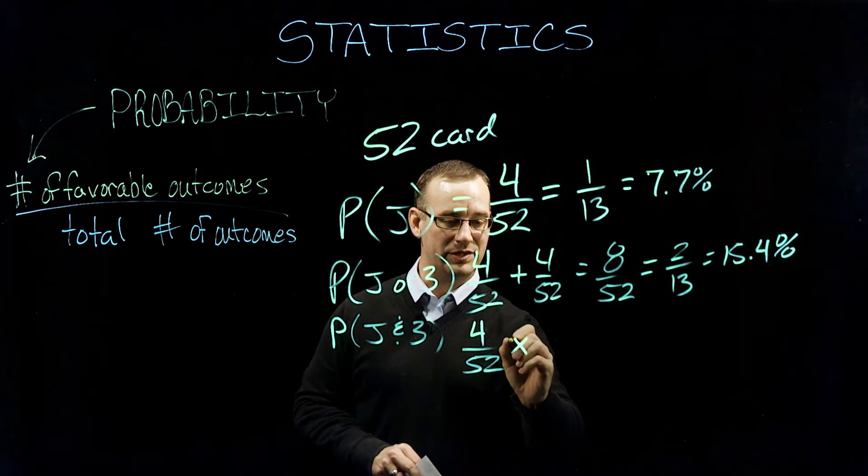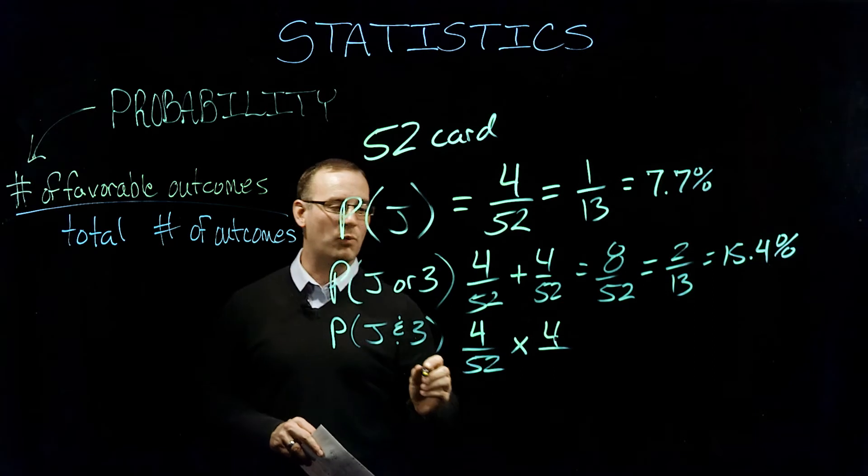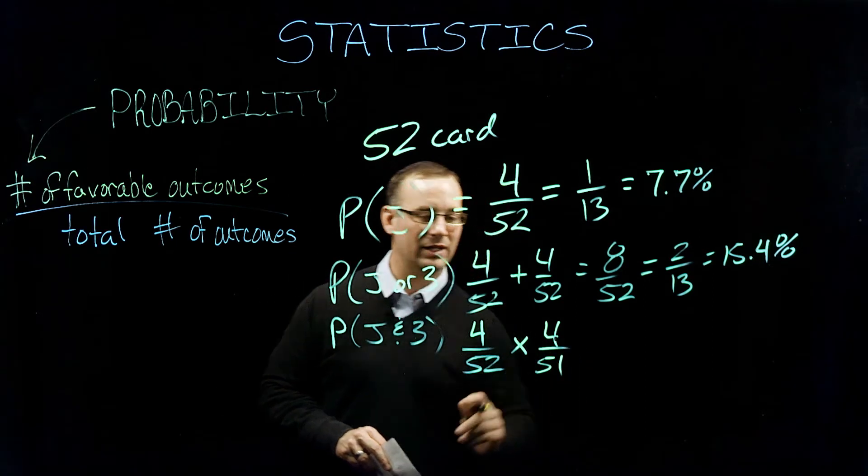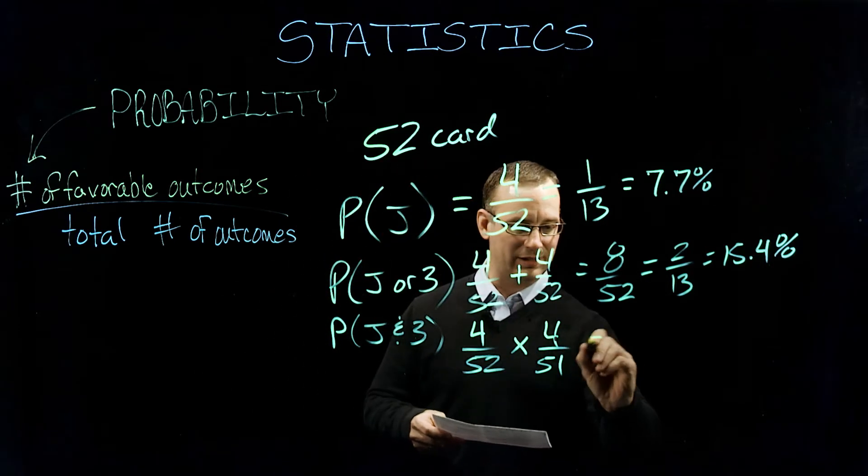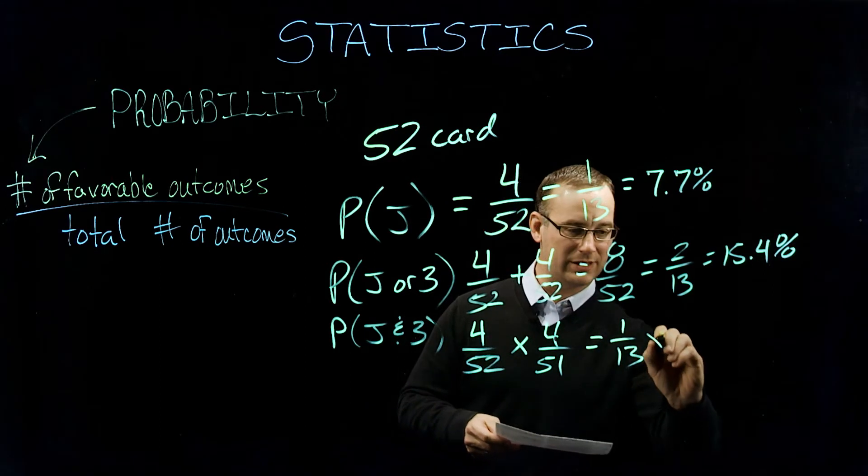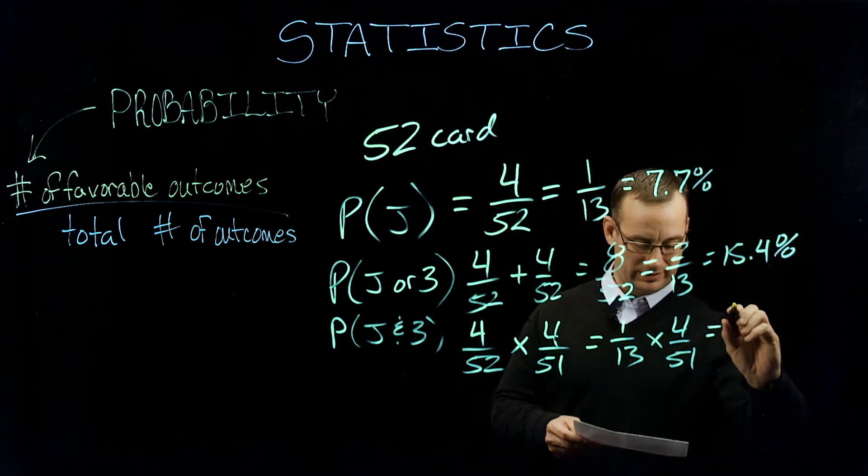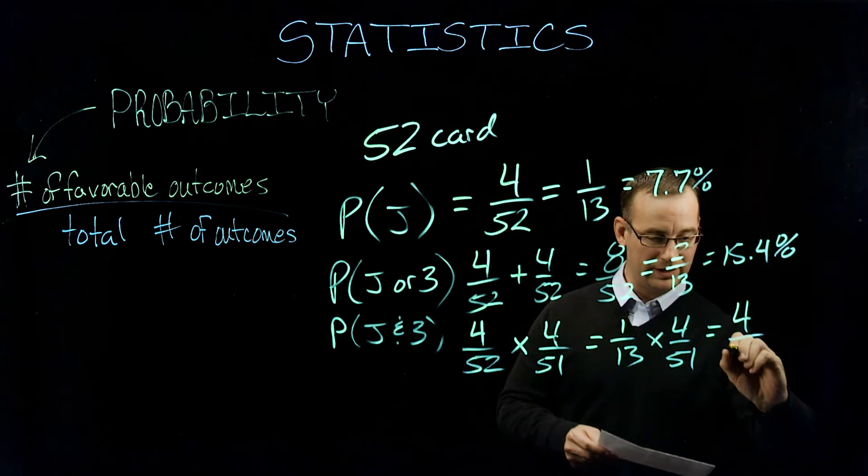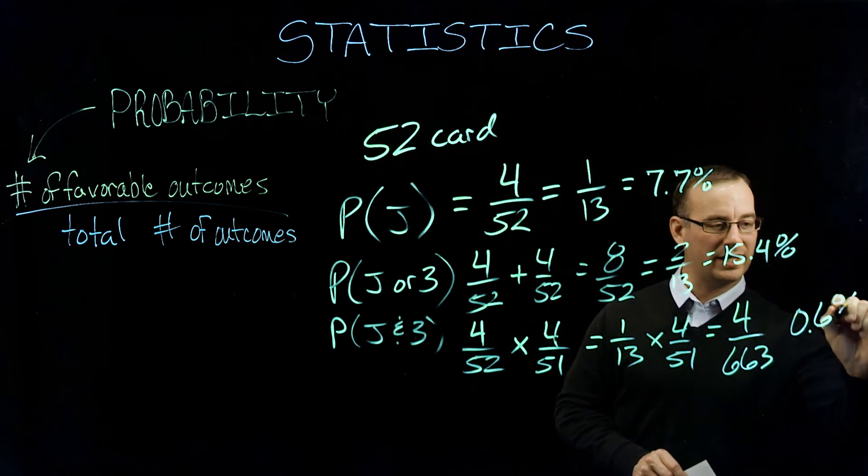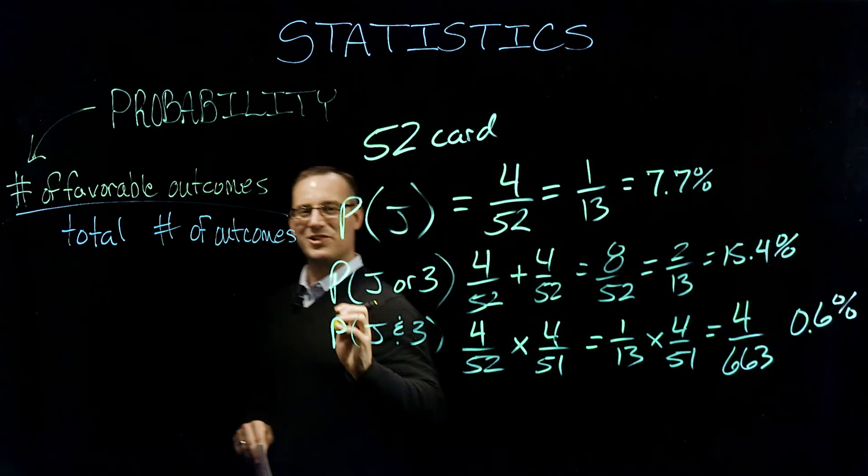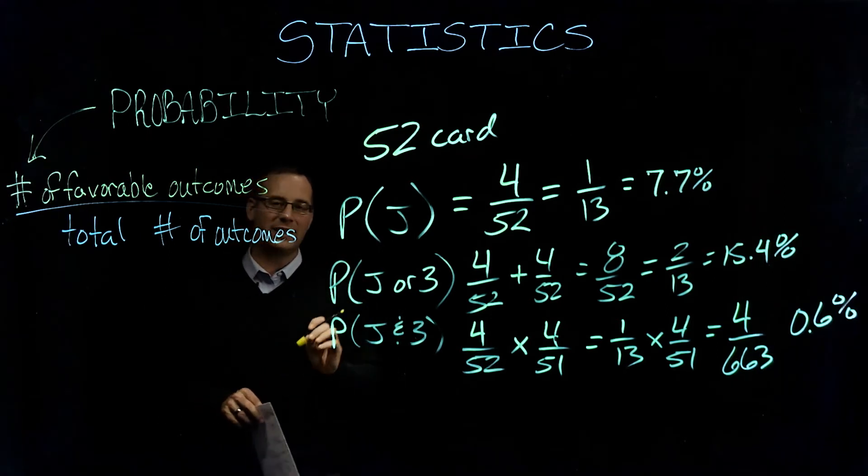So instead of plus, in addition, we're going to multiply this. So four out of 52 times, now we've got to come up with our three and we've got one less card in the deck. So four over 52 times four over 51. If our math is correct, we could simplify that to one out of 13 times four out of 51. But in essence, what that's going to give us is four out of 663 times, or about 0.6% of the time we're going to be able to draw a jack and a three.